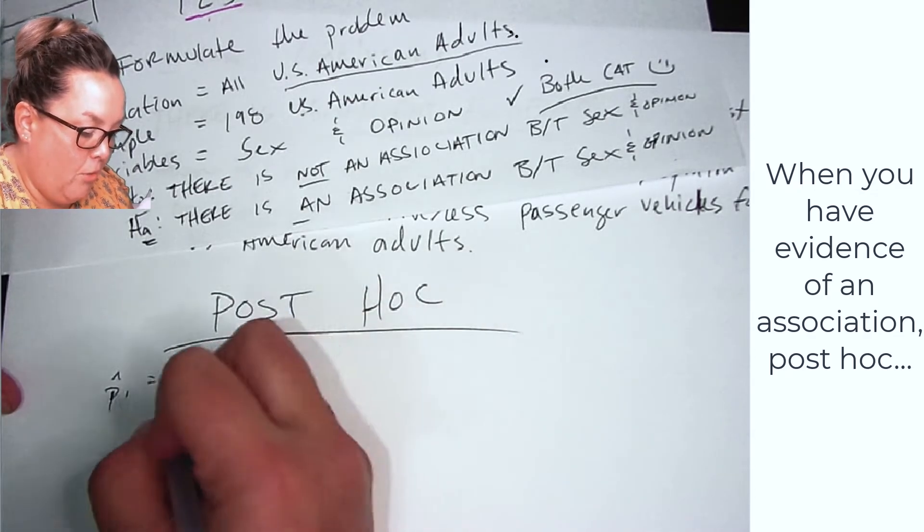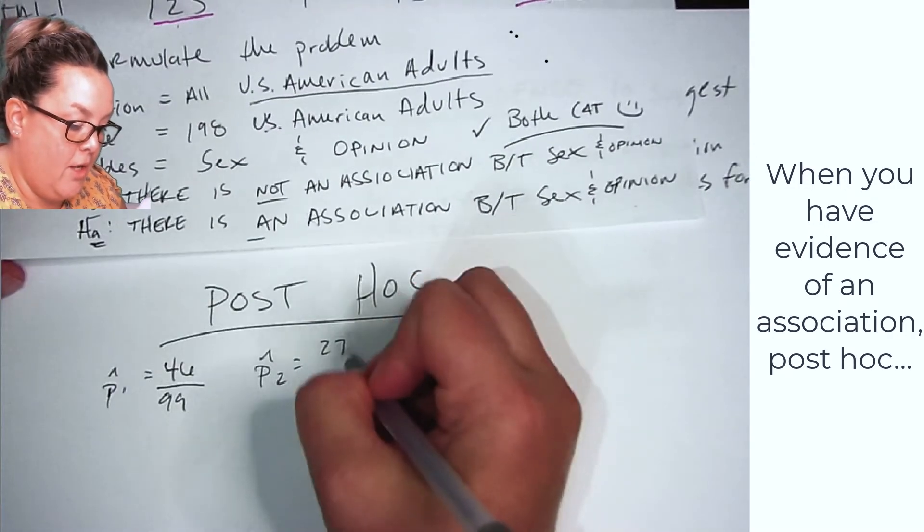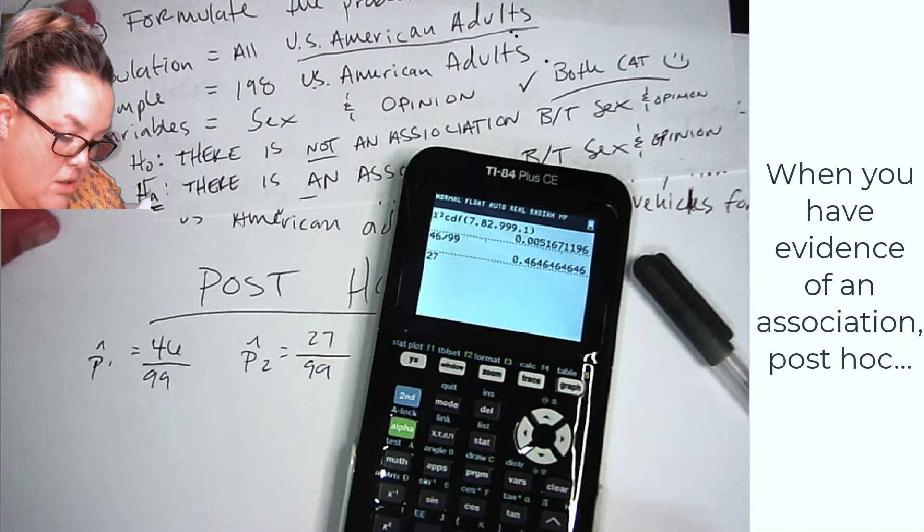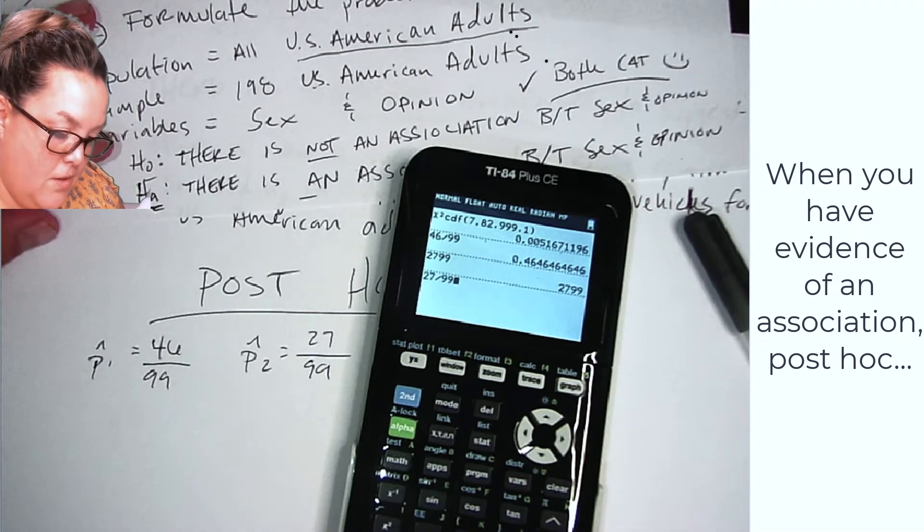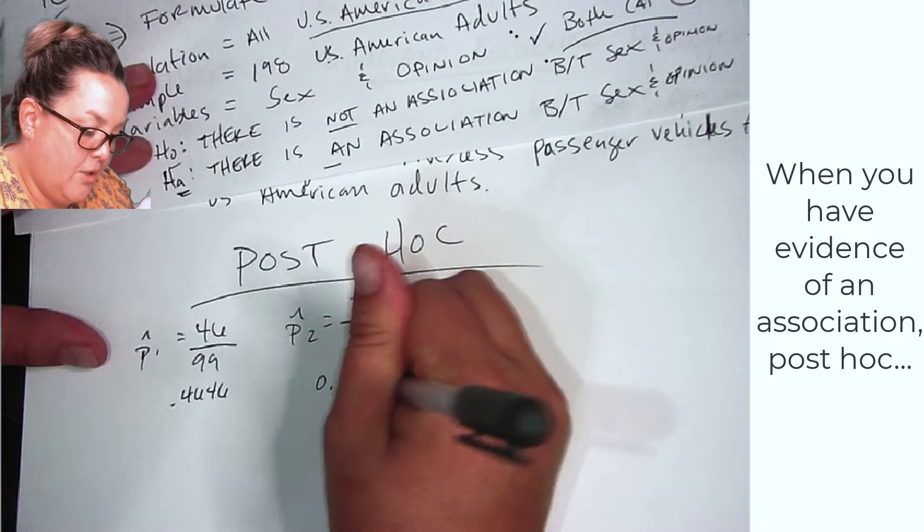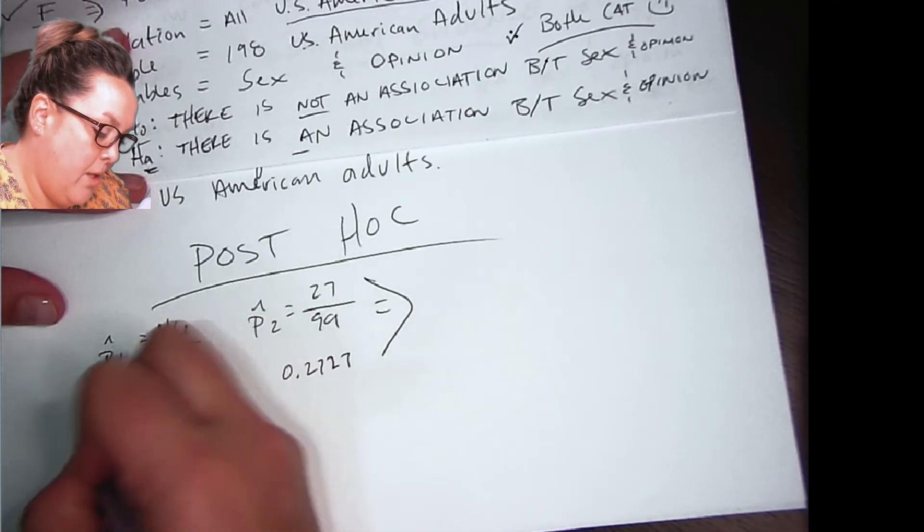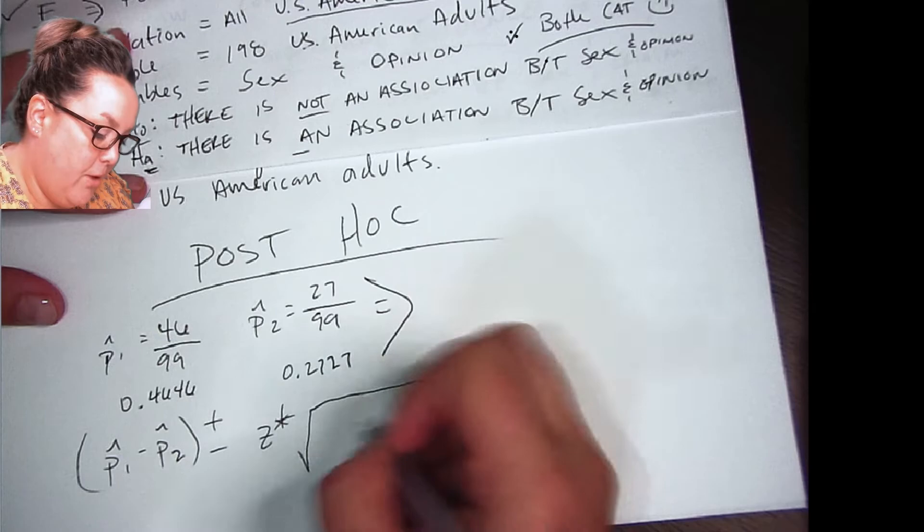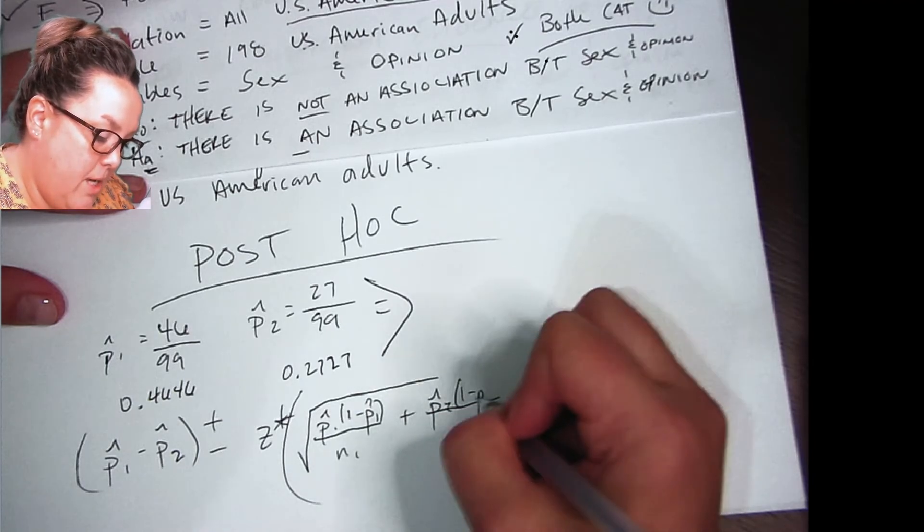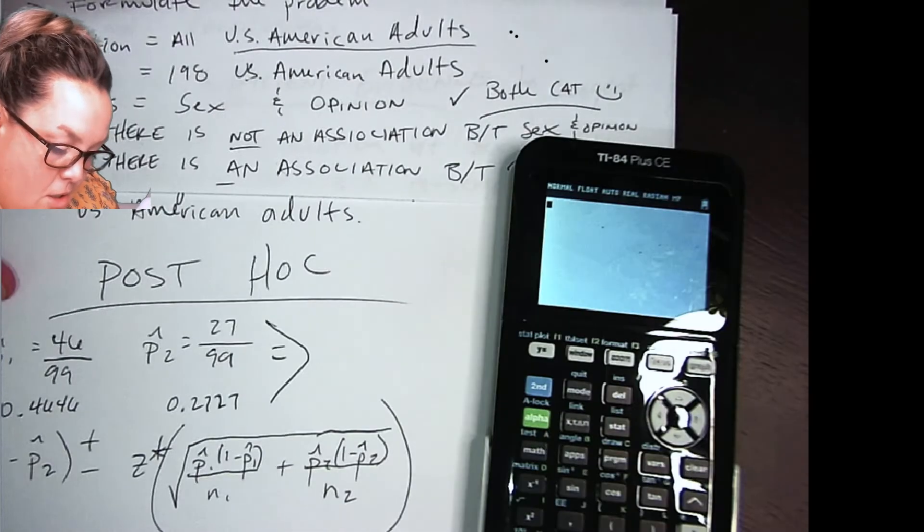So to calculate P hat sub one, we have 46. That's the observed count. And then I'm going to divide by 99. And then the P hat sub two is the observed count for women. So 27 divided by the 99. And those come out to be, so I have 0.4646 and 0.2727. So I'm going to use these values to calculate my confidence interval, which remember is P hat sub one minus P hat sub two. And then you add and subtract your Z star multiplier and you multiply that by the standard error, which is P hat sub one times one minus P hat sub one all over N sub one plus P hat sub two times one minus P hat sub two all over N sub two. And then we take the square root of that. So I'm just going to plug and chug and follow along.